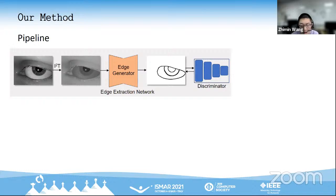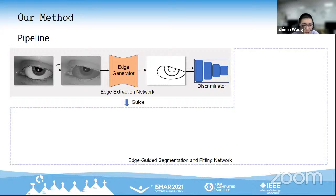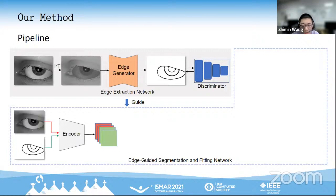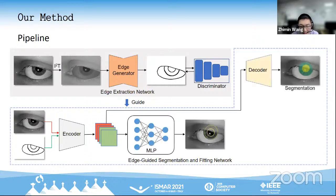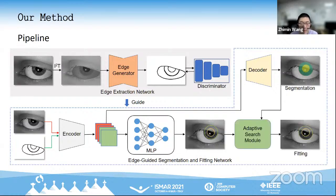The edge extraction network is optimized with adversarial learning to produce high-quality edge maps. We then propose the edge-guided segmentation and fitting network. Both eye images and the generated edge maps are fed into the network to perform multi-task learning. The network respectively generates the eye segmentation and regresses the ellipse parameters of pupil and iris. We notice the regressed parameters are usually inaccurate.